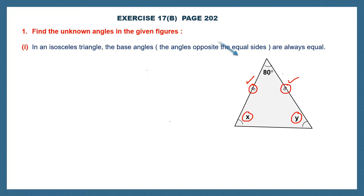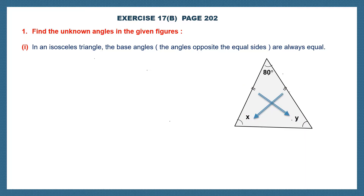So what are those two angles? The first one is angle y, which is opposite one equal side, and the other one is angle x, which is opposite the other equal side. So the angles opposite to equal sides are called base angles, and base angles are always equal. That means x is equal to y.